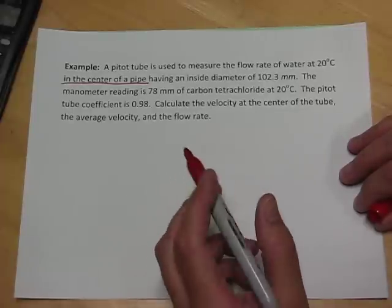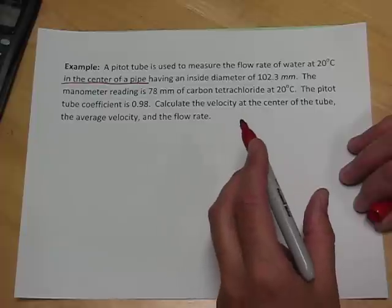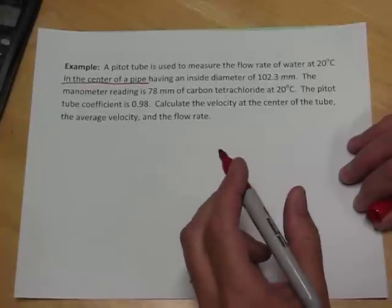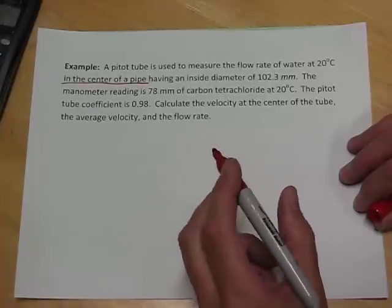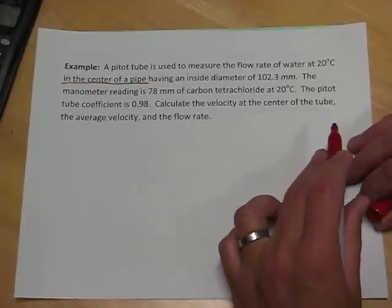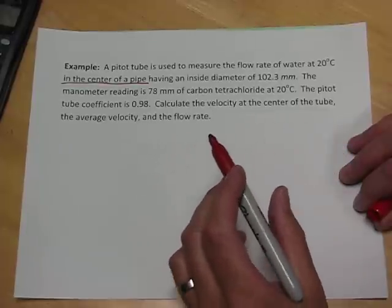The manometer reading on the pitot tube is 78 millimeters of carbon tet. The pitot tube coefficient, which is a friction coefficient associated with the pitot tube, is 0.98. Calculate the velocity at the center of the tube, the average velocity, and the flow rate.